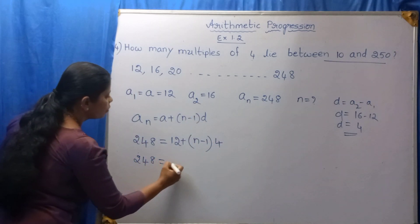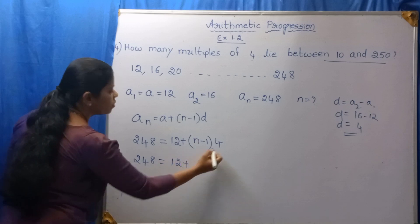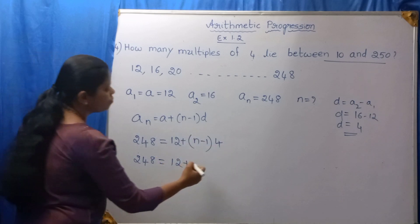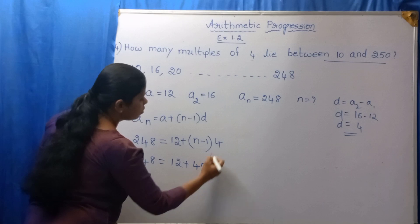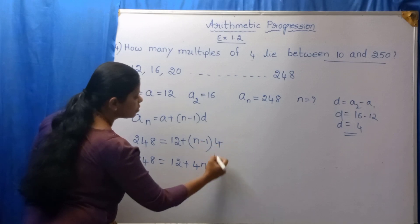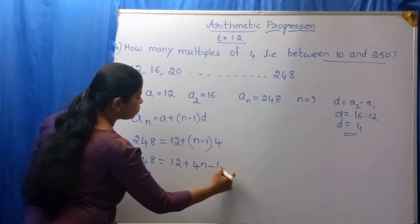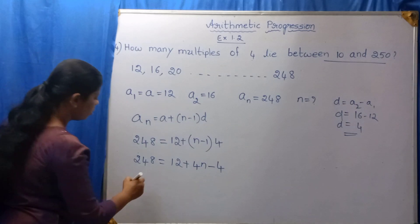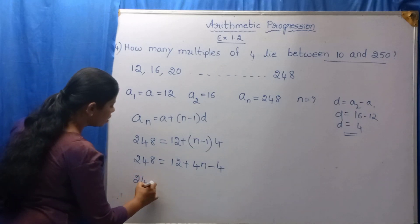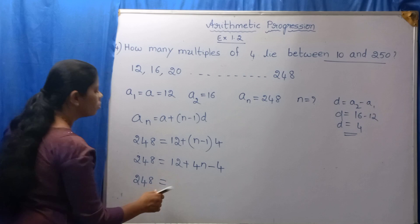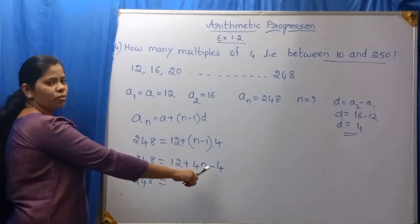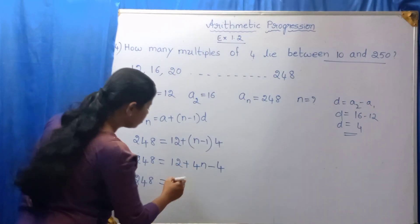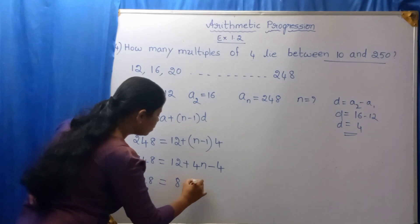248 is equal to 12 plus 4 into n, which is 4n. Then, plus into minus is minus. 4 into 1 is 4. Then, 248 is equal to 12 minus 4, which is 8, plus 4n.